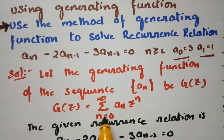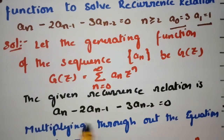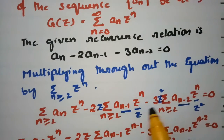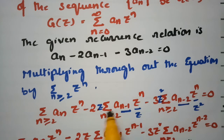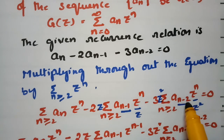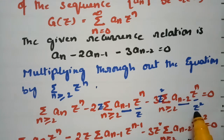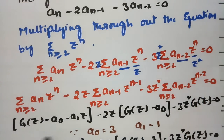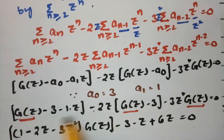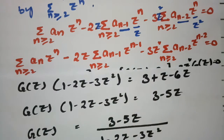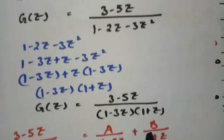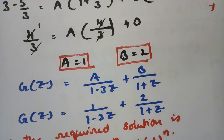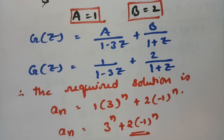To recap: the generating function G(z) equals sigma from n=0 to infinity of aₙ·zⁿ. We multiplied the recurrence throughout by zⁿ, adjusted indices by multiplying and dividing by z and z², applied the generating function definition, then resolved into partial fractions to get A equals 1 and B equals 2, giving the final solution.